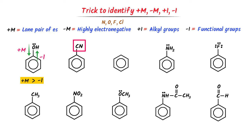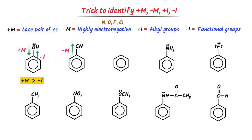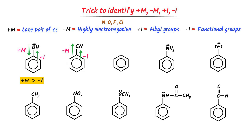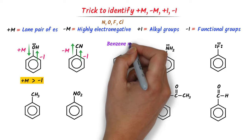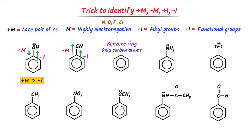In the second case, there is no lone pair of electrons, so it shows negative M effect. On the other hand, CN is a functional group, so it shows negative I effect. Hence, there is both negative M effect and negative I effect in this organic compound. In the third case, it is just a benzene ring with six carbon atoms — hence it doesn't show any mesomeric effect.